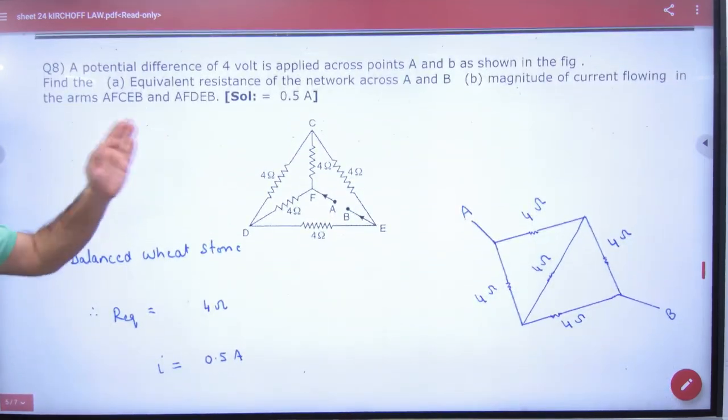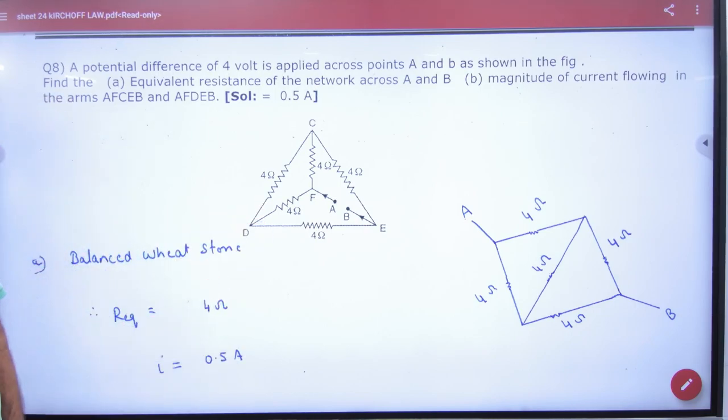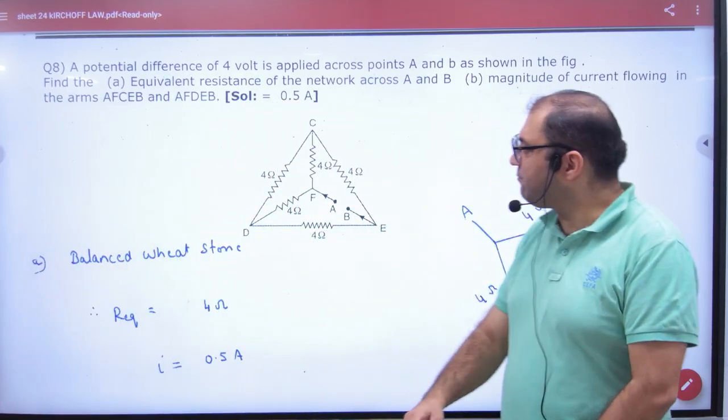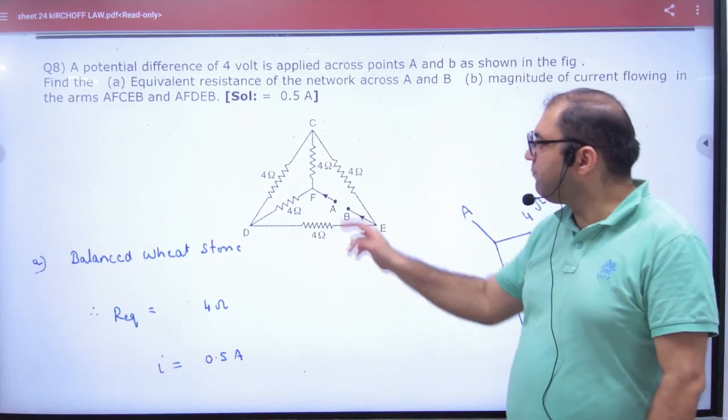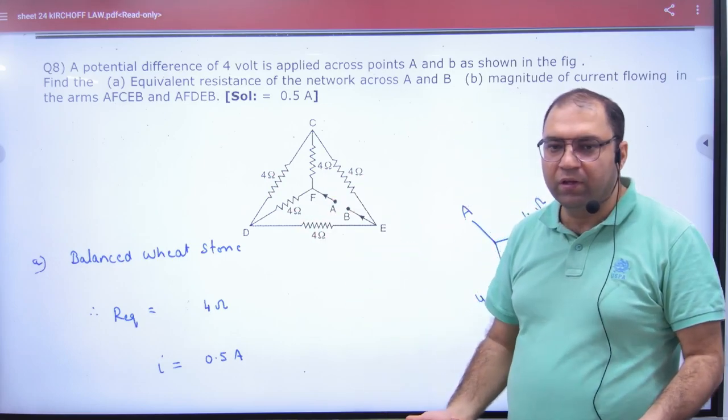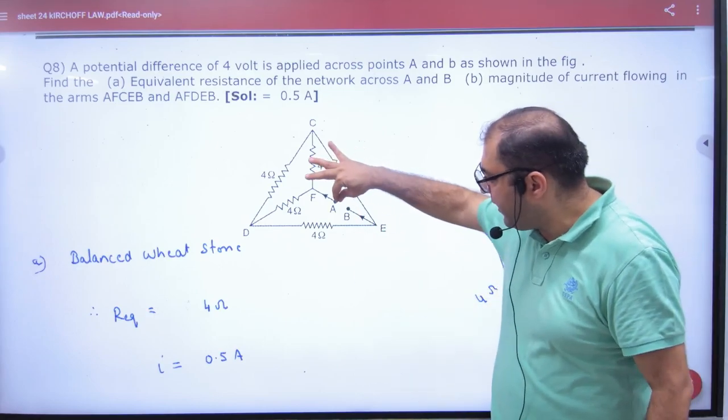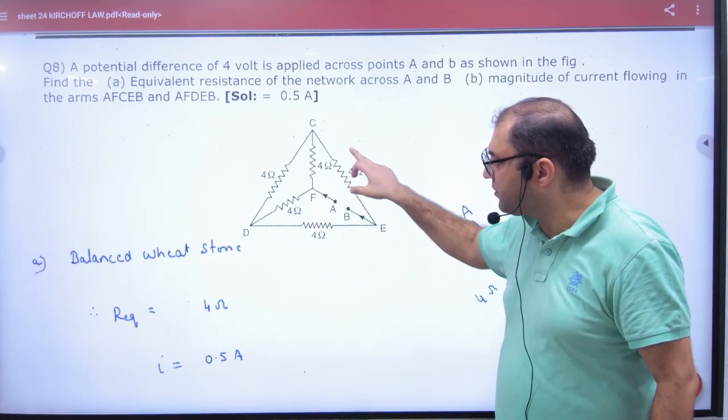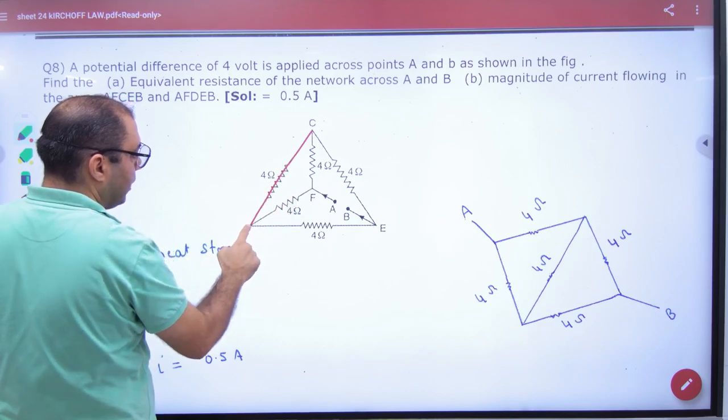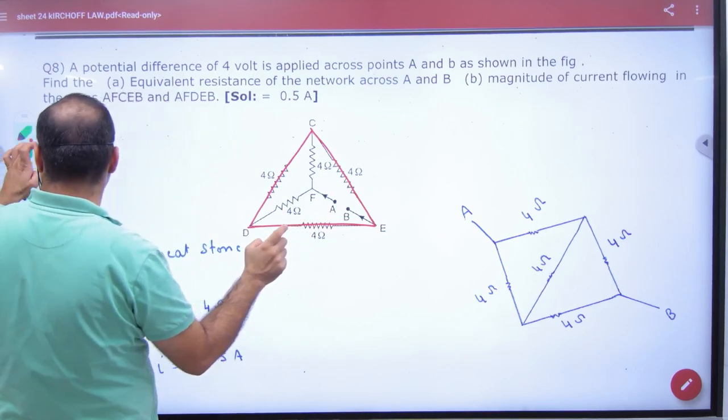Next, this is the main question that is the NCERT. What to do in this question? We put on it, we have to do it in the old paper. In this equivalent resistance A and B you will not see this because you have to do it 4 by 4, 4 by 4.